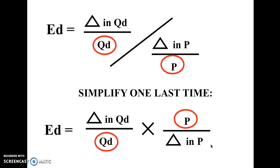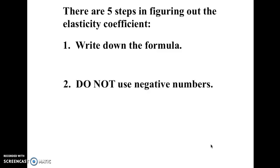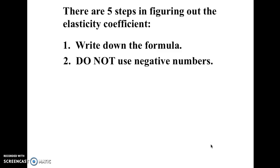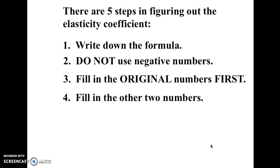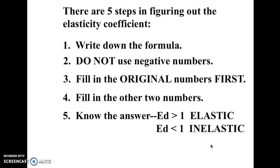So I'm going to go through one quick example, but it's just going to be verbal, so you might have to write it down. Here are some five steps for figuring it out. Make sure you write down the formula that we just had. Don't use negative numbers, fill in the original numbers first, and then you fill in the other numbers, and make sure you remember the answer.